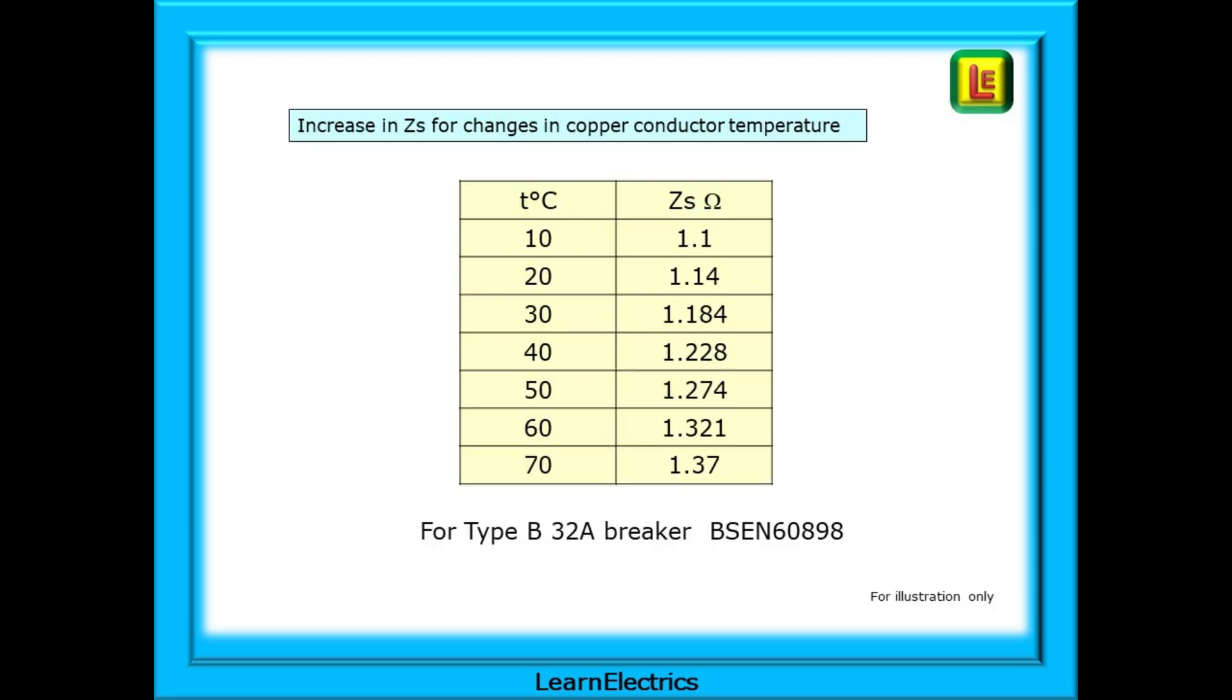This table shows the increase in ZS for changes in the copper conductor temperature for the 32 amp device. This is for illustration purposes only. When testing and completing certificates we should always use the 10 degree temperature the ZS measured as shown in the on-site guide. As our skills increase we can make adjustments to ZSM where the numbers are close to the maximum limit and how to do this will be the subject of another video from Learn Electrics.